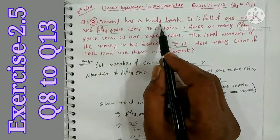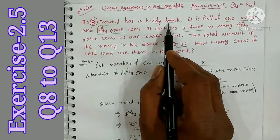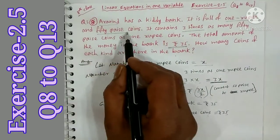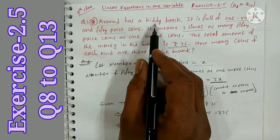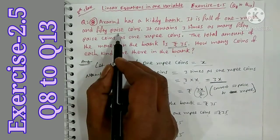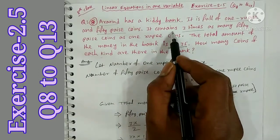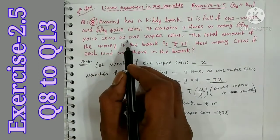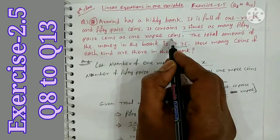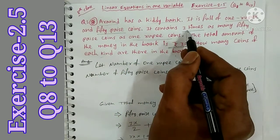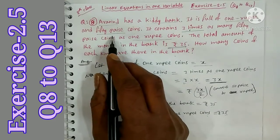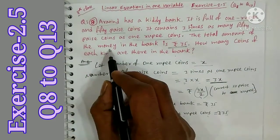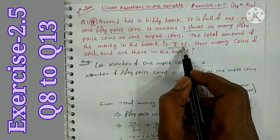Question number 8. Aravind has a kiddie bank. It is full of 1 Rupee and 50 Paise coins. It contains 3 times as many 50 Paise coins as 1 Rupee coins. The total amount of money in the bank is Rupees 35.